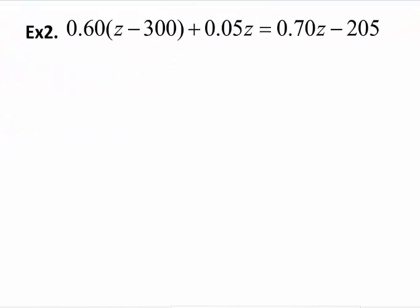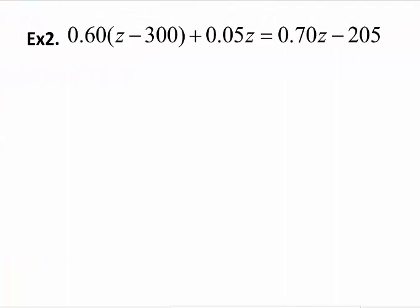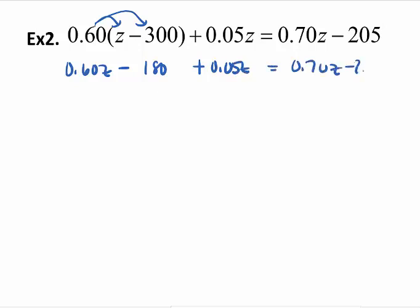Going to number two, we have a problem with decimals. This is a problem that I suggest you have an option. Fractions, I always tell you to clear them. Decimals, since you have a calculator, it's up to you. But I would clear my parentheses first because I think it's confusing for some of you on what's a term and what's not. So I'm going to go ahead and distribute. Multiply 0.6 times 300. I'm going to get 180, and I'm just bringing everything else down right now.